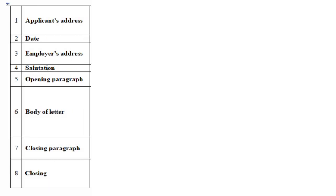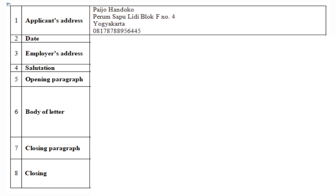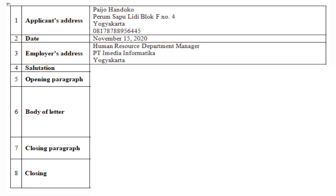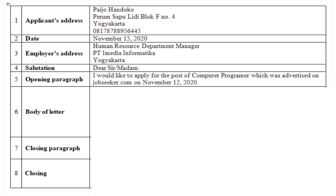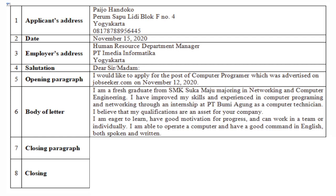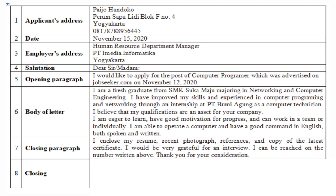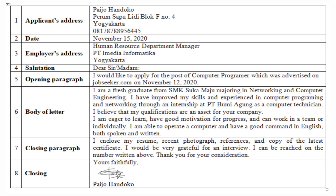The structure consists of: applicant's address, date, employer's address, salutation, opening paragraph, body of the letter, closing paragraph, and closing. Let's begin with the first — applicant's address: name, address, and phone number. Then date, as you may see here. Employer's address, which you can also find in the job vacancy. Salutation — for example, Dear Sir or Madam. The opening paragraph is about the basic reason for the application letter. The body of the letter covers your skills, background, and experiences. The closing paragraph is about your availability for an interview or test. And the last is closing — consisting of a complementary clause, signature, and name. Okay, that's all about application letter.